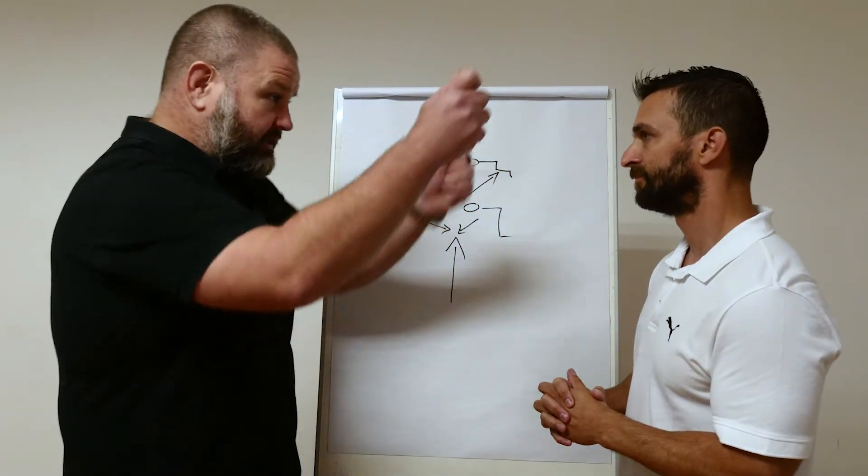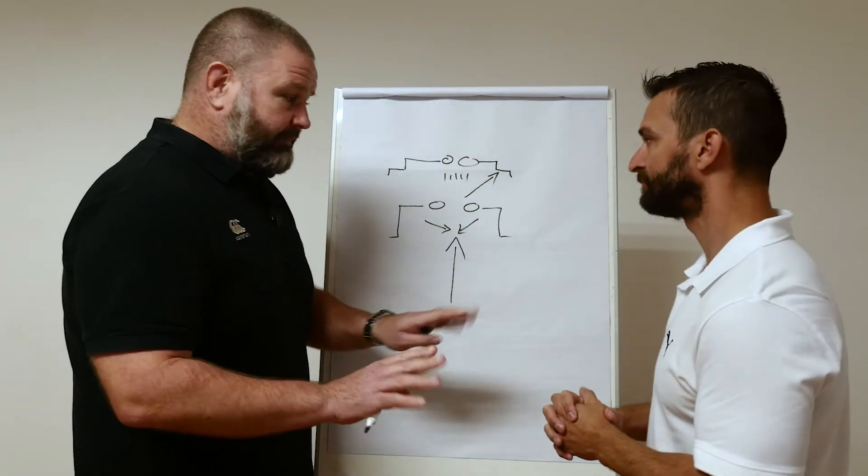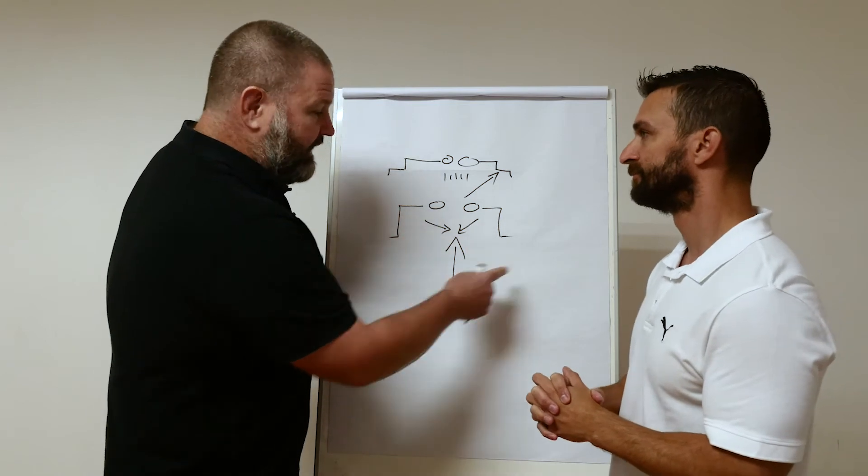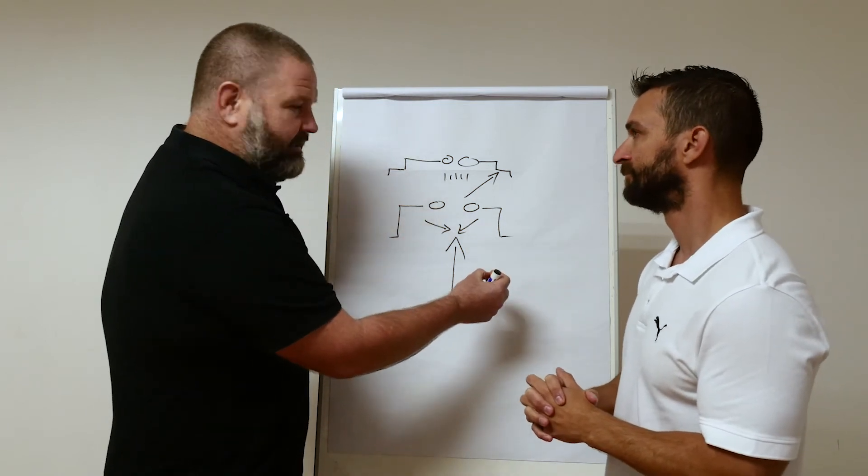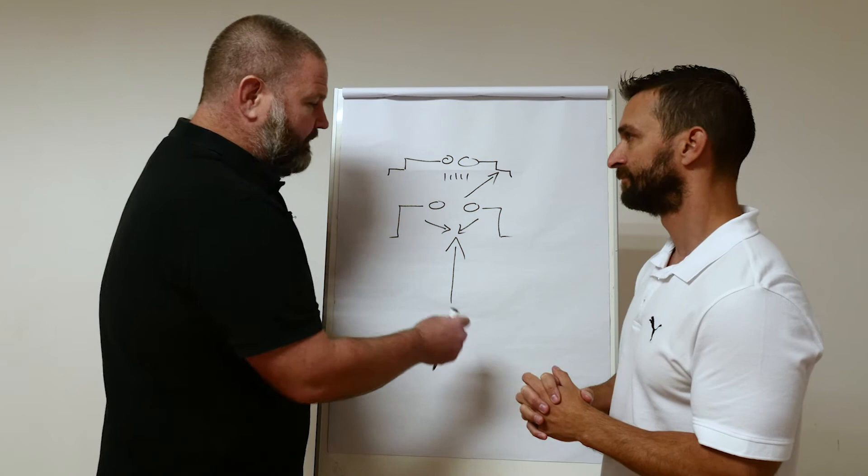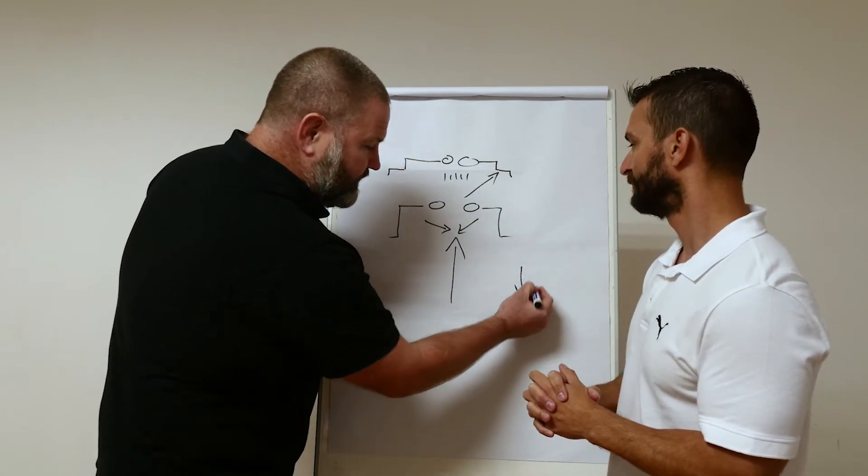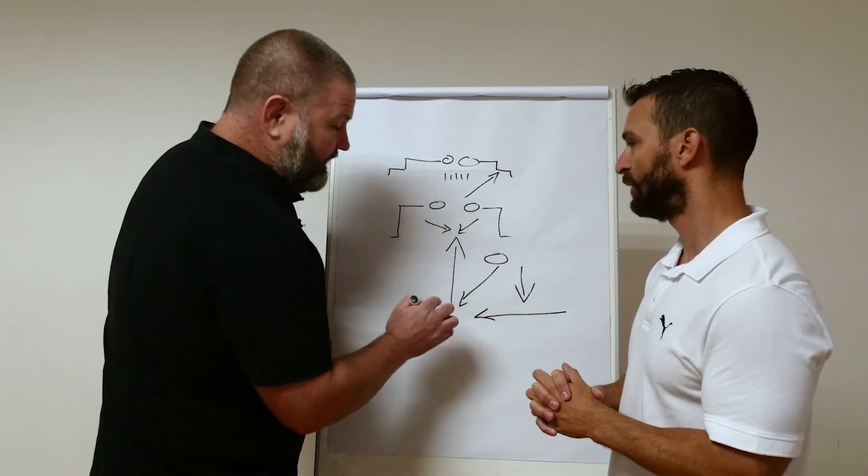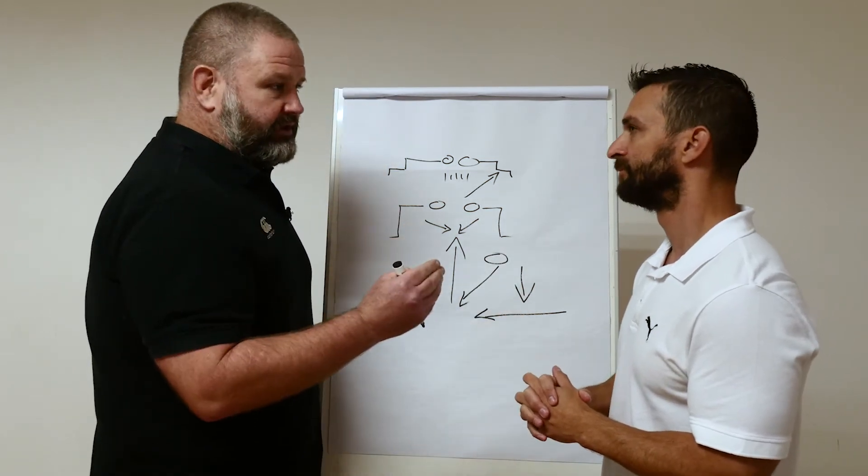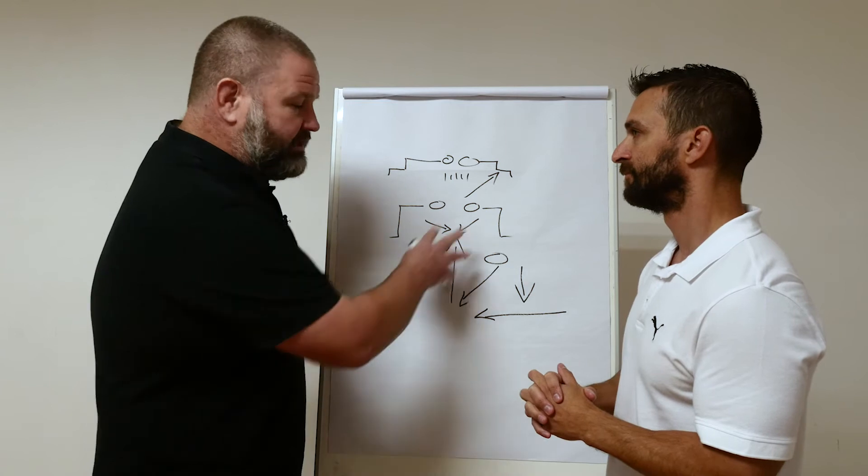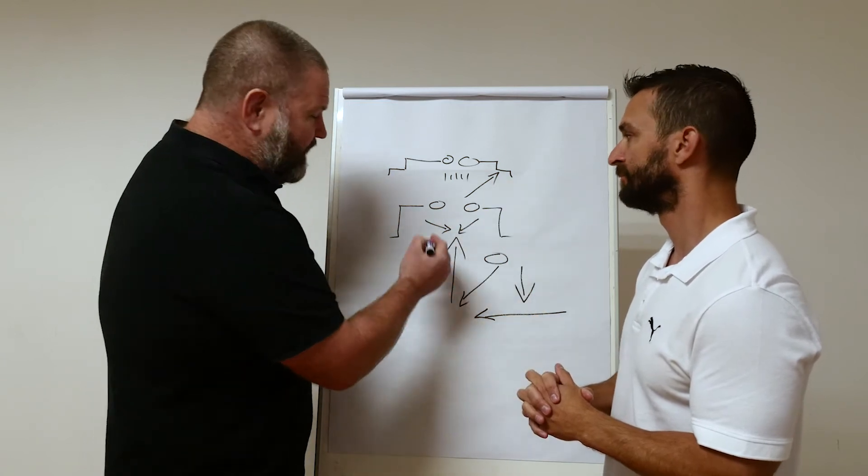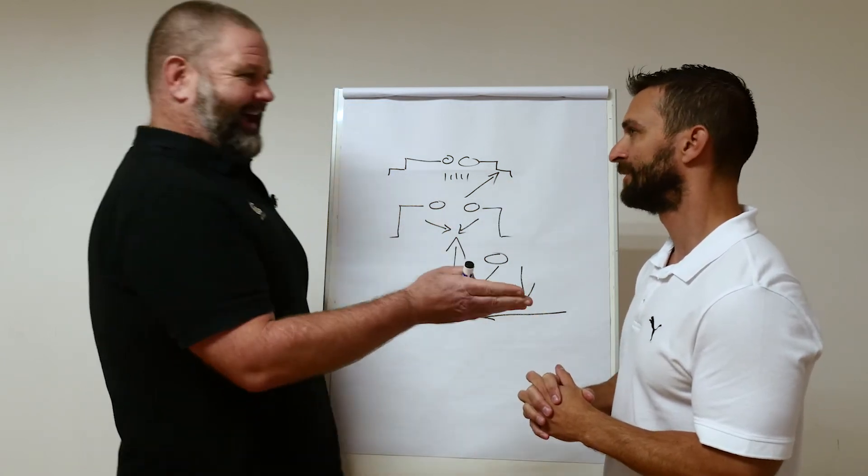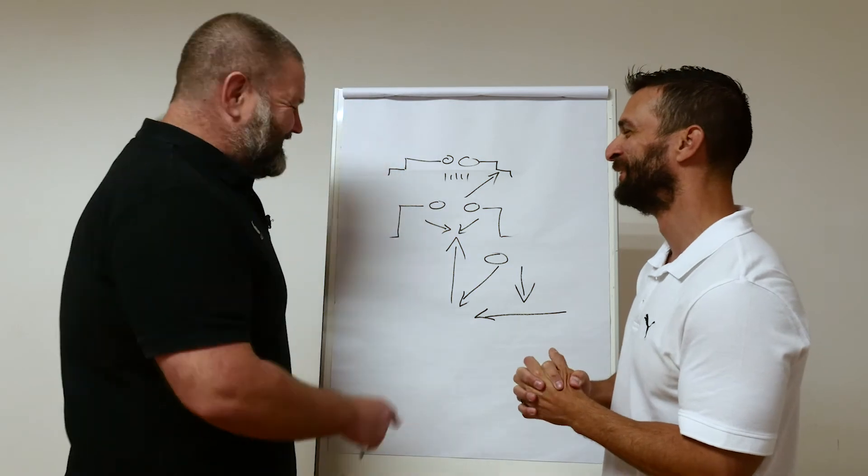If you still allow the team feeding the scrum to call the timing—the ref can say we're good to go—but if you can call it, they can coordinate their engagement and explode together, plus get the strike from the foot. That's your advantage: you get the feed and control the timing. Let's have the straight feed, get that scrum set higher with fewer resets.